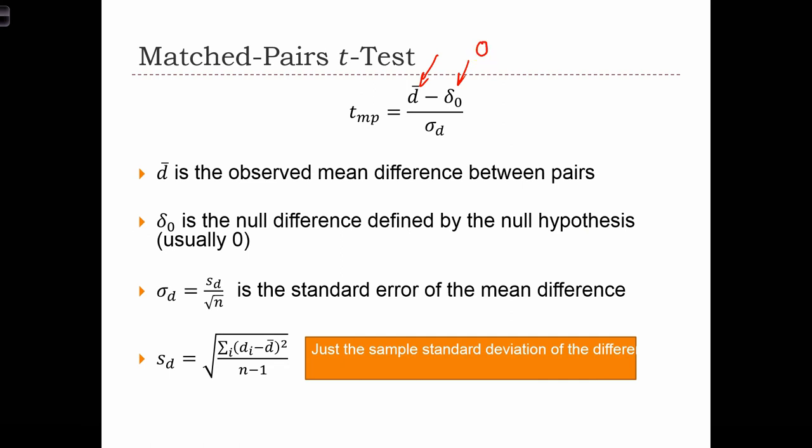This is usually going to be zero. Usually, our null hypothesis assumes that the two variables are equal. Sometimes we have some other assumption, like a known difference between those two variables, and we want to see if it's different from that known difference. But usually, δ₀ is going to equal zero.